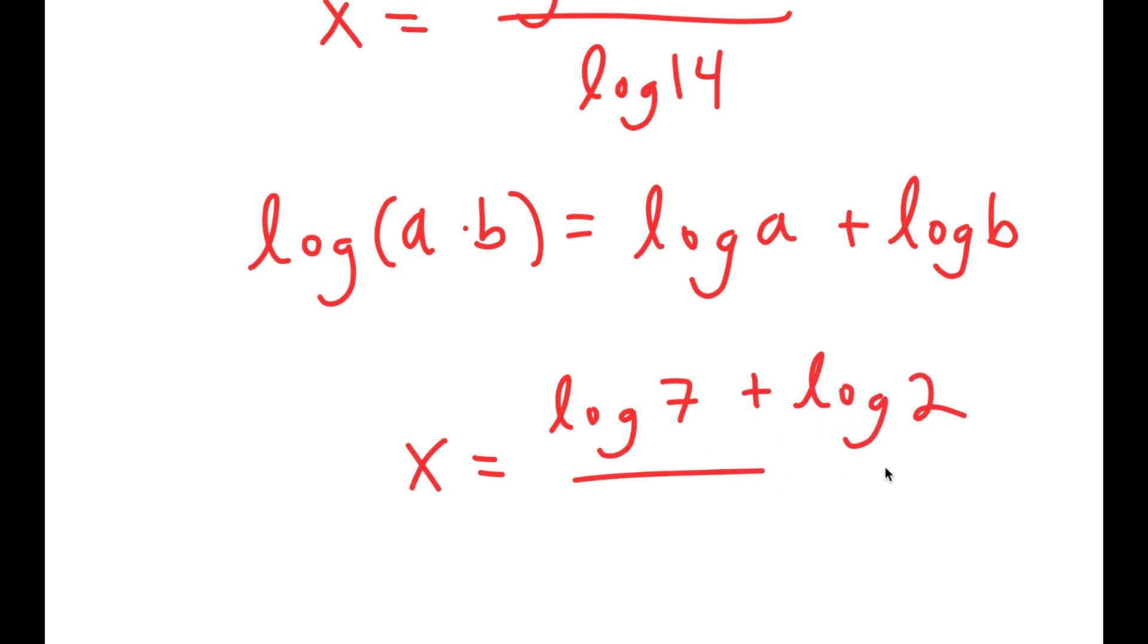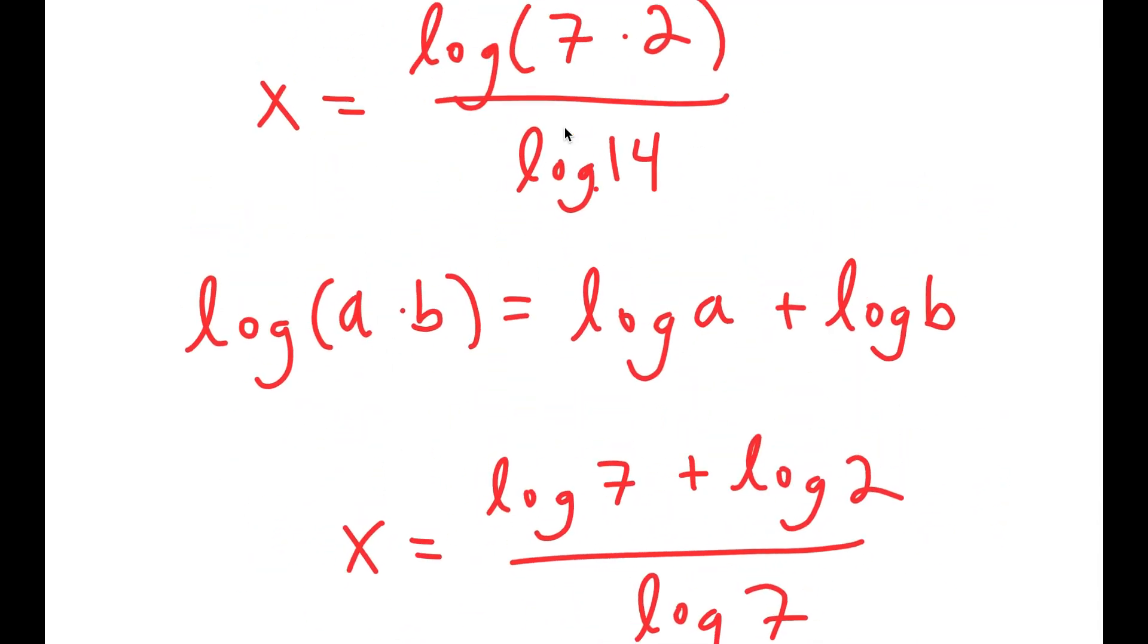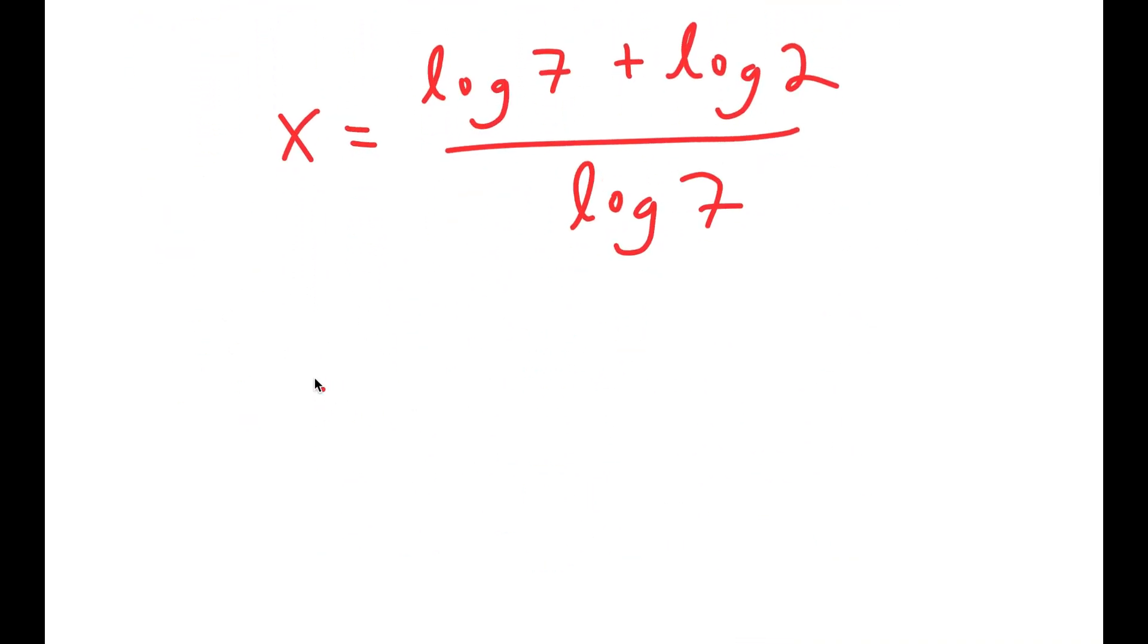And I have this over log 7. Sorry, this should be 7, not 14. So now I get log of 7 over log of 7 plus log of 2 over log 7.